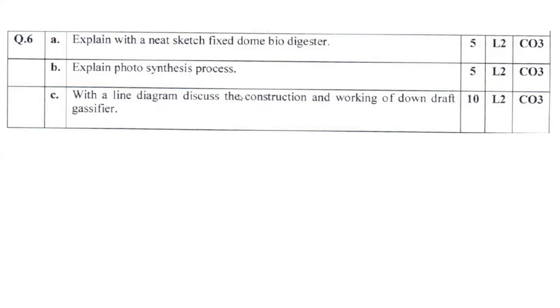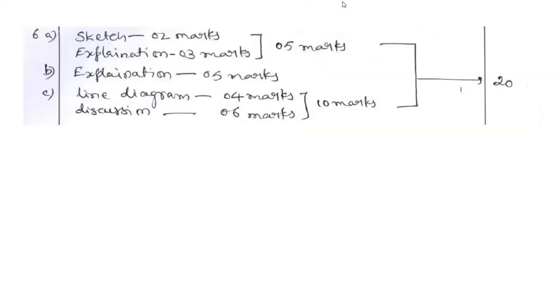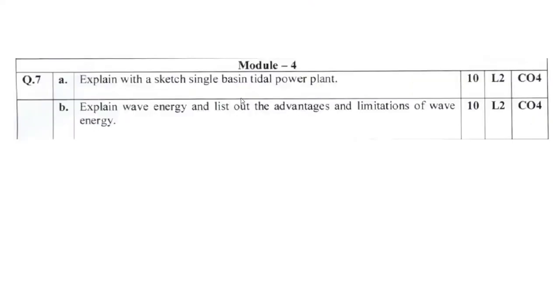Question 6C: with line diagram discuss construction and working of downdraft gasifier. There are different types of gasifiers: updraft, downdraft, and many varieties. Diagram and explanation carries 10 marks. Try to allocate diagram 4 marks, discussion 6 marks. 4 plus 6 equals 10.